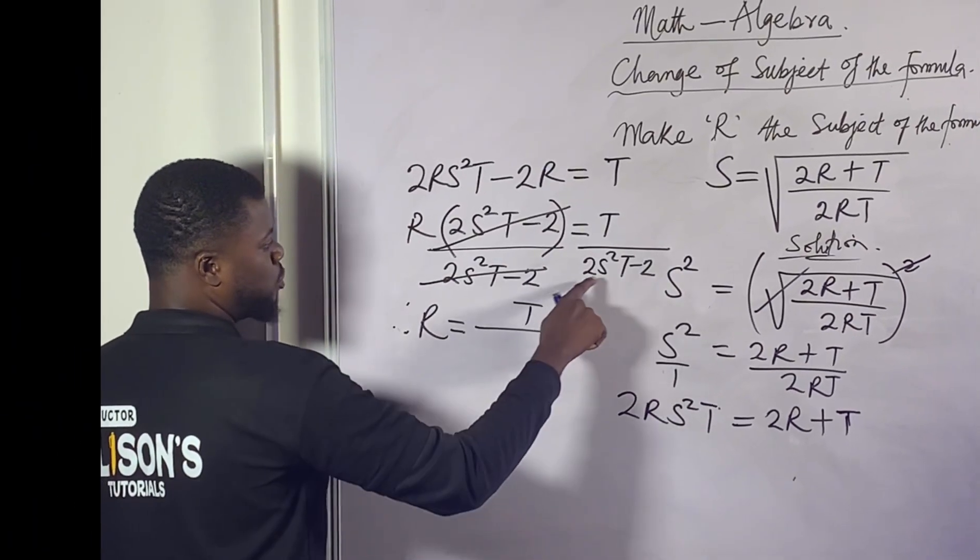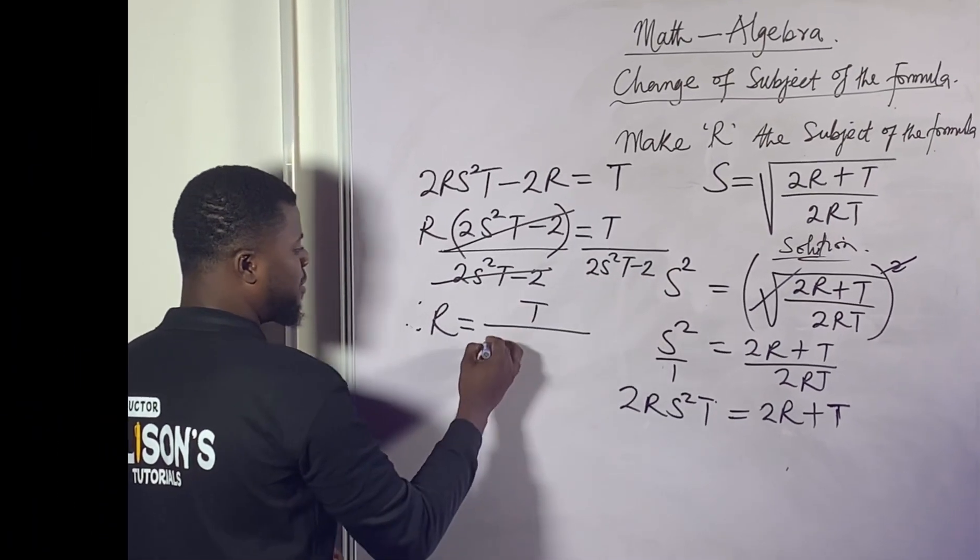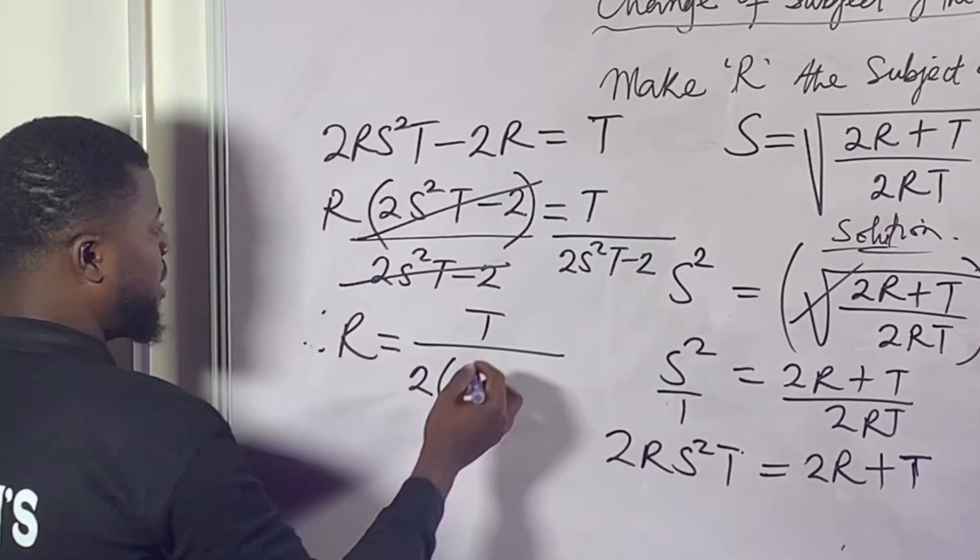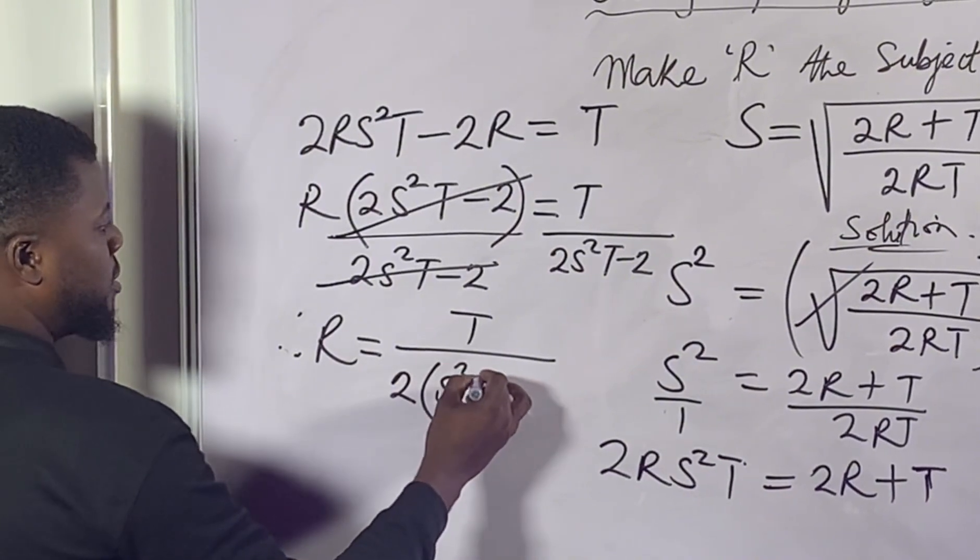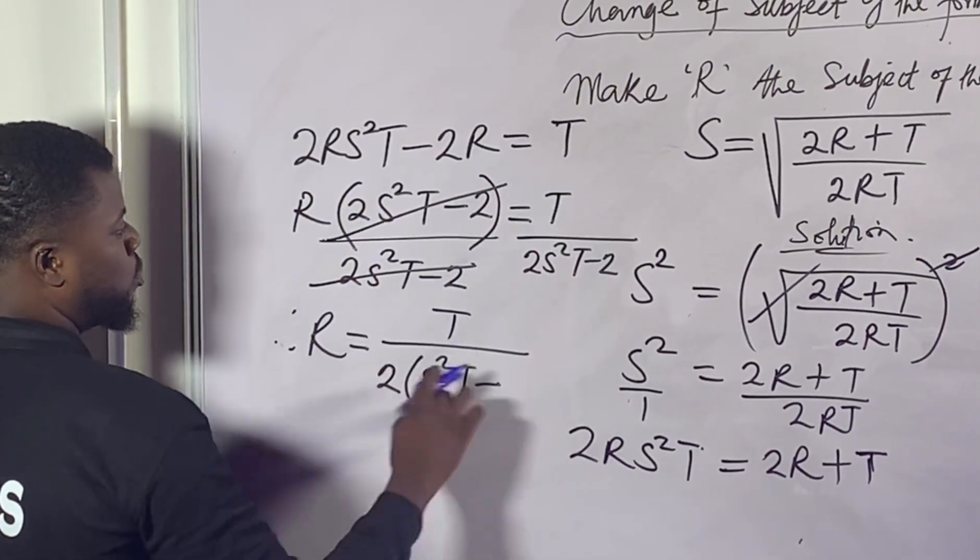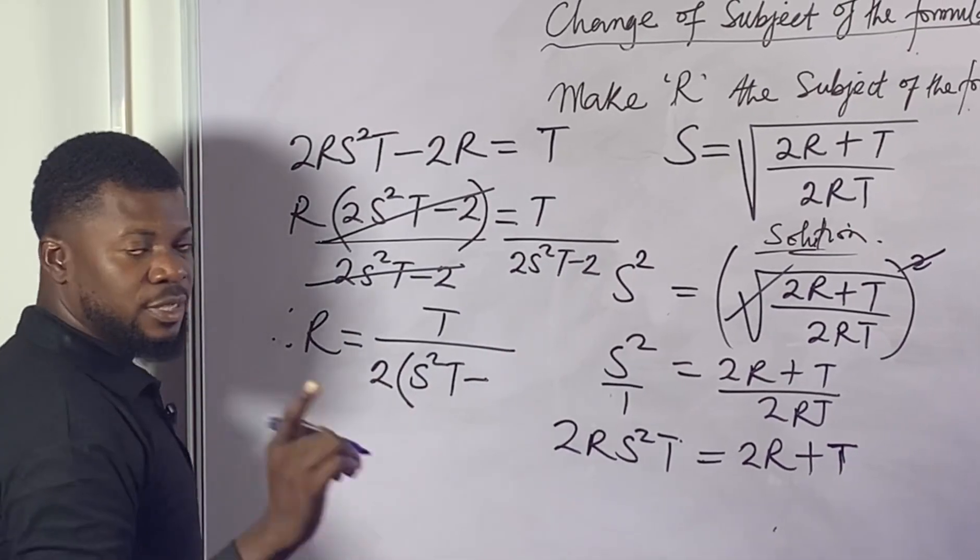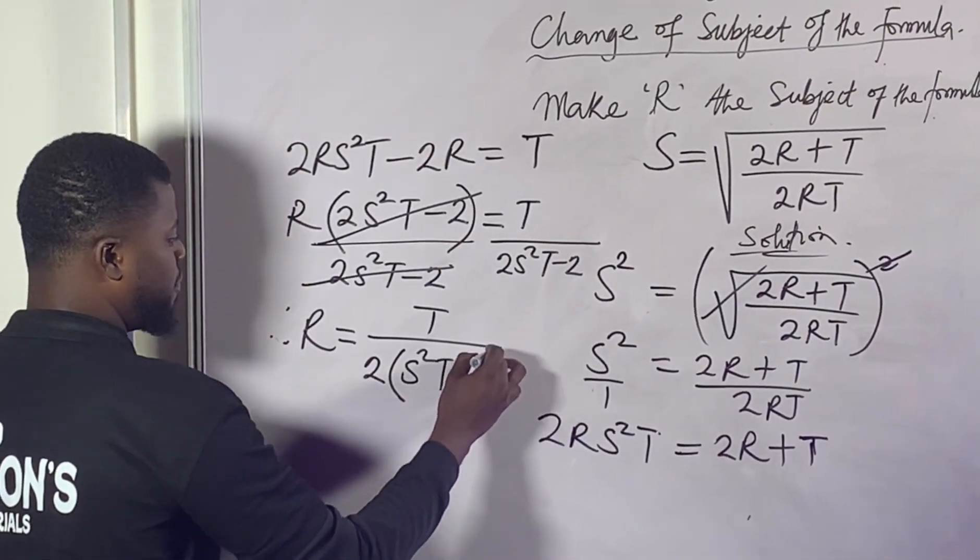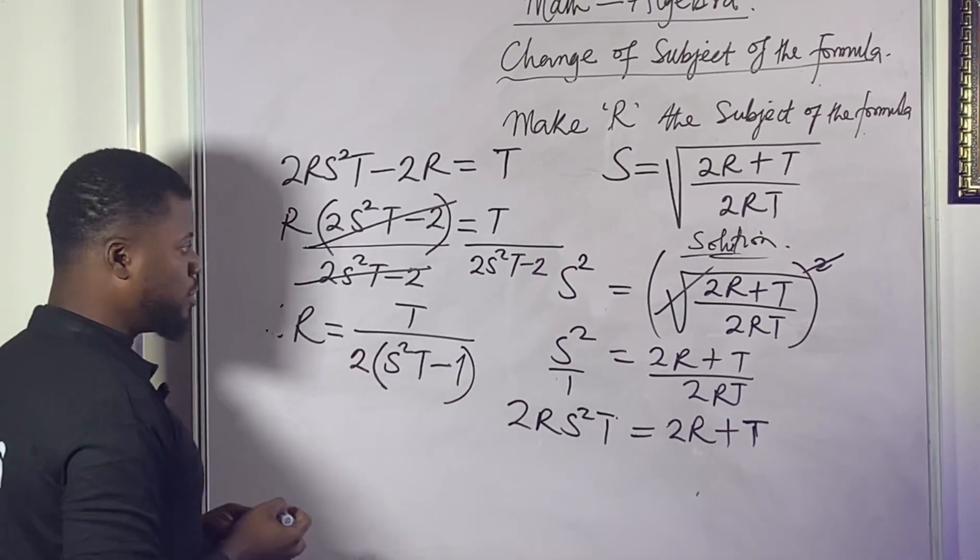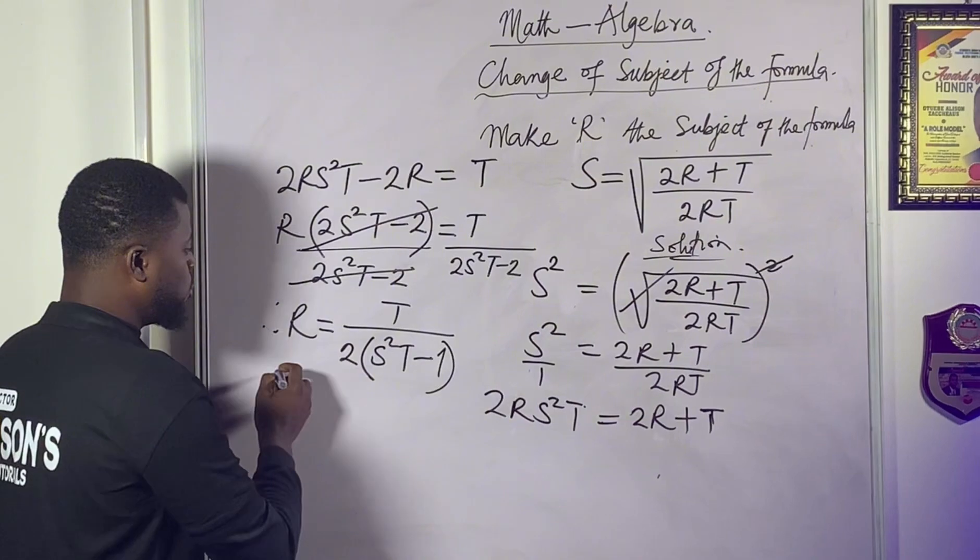We also notice that 2 is common to both sides. You can easily factor out 2 if you want to keep it more simple. Then you'll be left with, when you pull out this 2, S²T will be left here. If you pull out this 2, 1 will be left - not 0, please, it's 1. If you expand this, if you clear this bracket, you definitely will have this. So this is the solution to the problem.